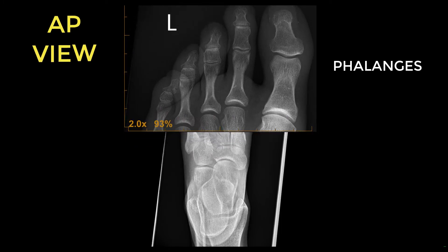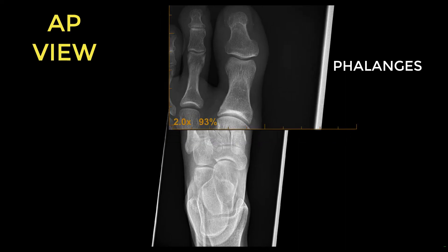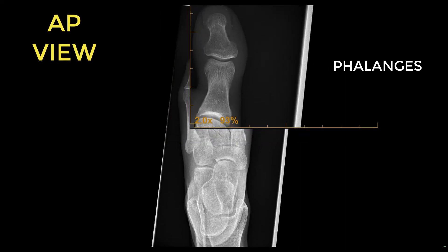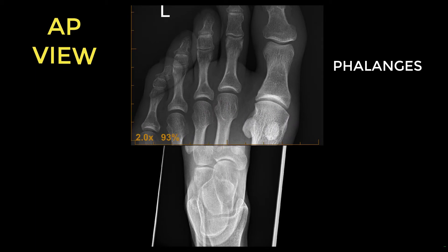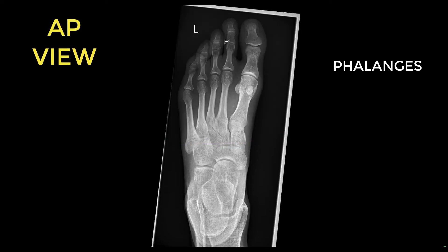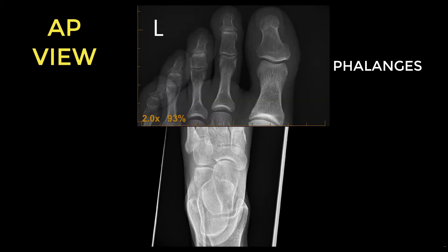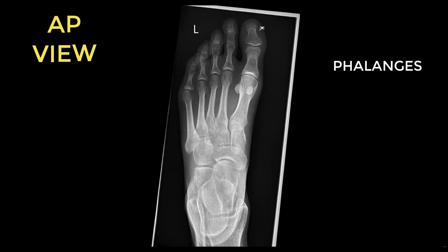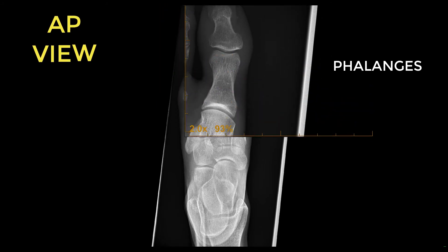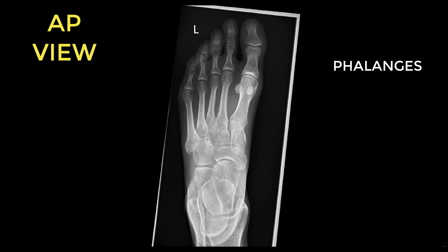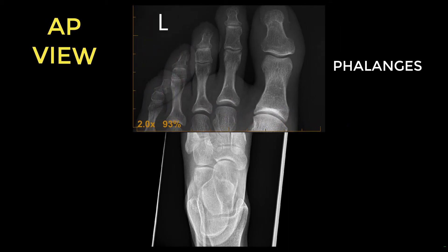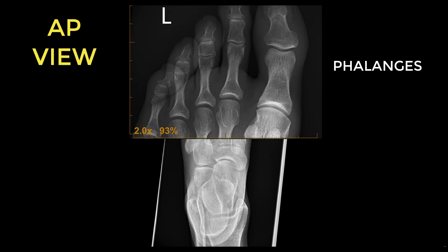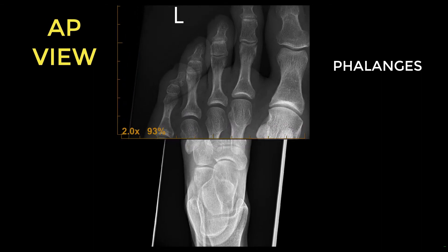You have the proximal phalanges, middle phalanges, and distal phalanges. In the great toe, you only have the proximal and distal phalanx. For the other toes, you have the distal phalanx, middle phalanx, and the proximal phalanx — some people call them proximal, middle, and distal phalanx.